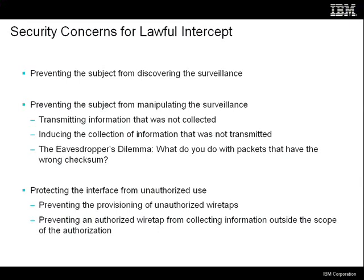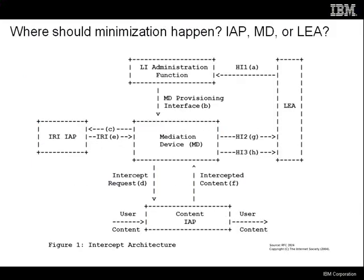The other security concern is protecting the interface from unauthorized use. There are two kinds: one is preventing unauthorized wiretaps — people without lawful authority from using the system. The other is preventing authorized wiretaps from collecting information they weren't authorized to collect, which is called minimization — we only collect what we were supposed to collect. The key architectural question is: where should minimization happen? Should it happen in the router, or should the router send everything to the mediation device to sort out? That question is at the heart of the technical debate about how to do this properly.